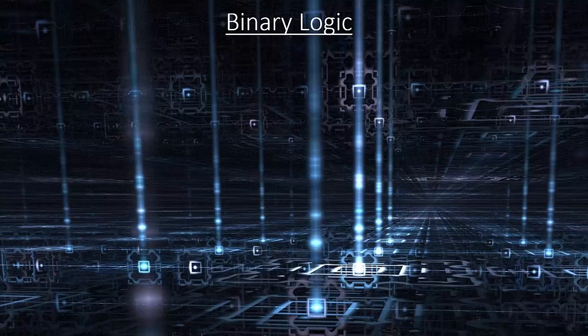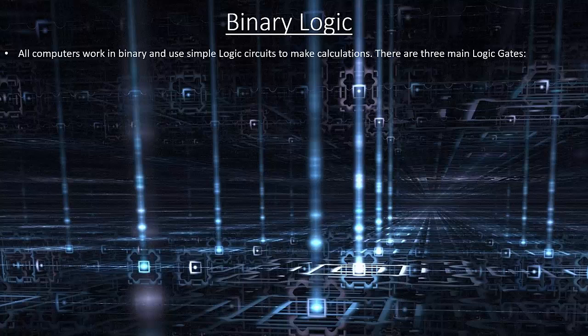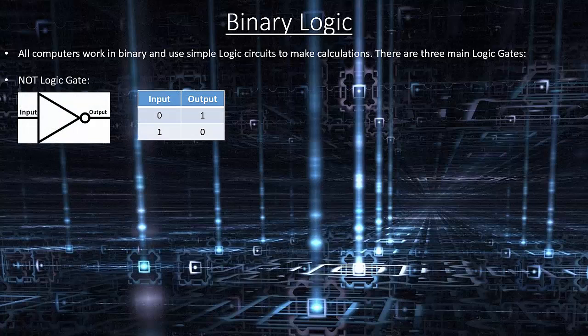Binary logic. All computers work in binary and use simple logic circuits to make calculations. There are three main logic gates. NOT logic gate: when the input is 0 the output is 1; when the input is 1 the output is 0. AND logic gate: when the inputs A and B are both 0, the output will be 0.